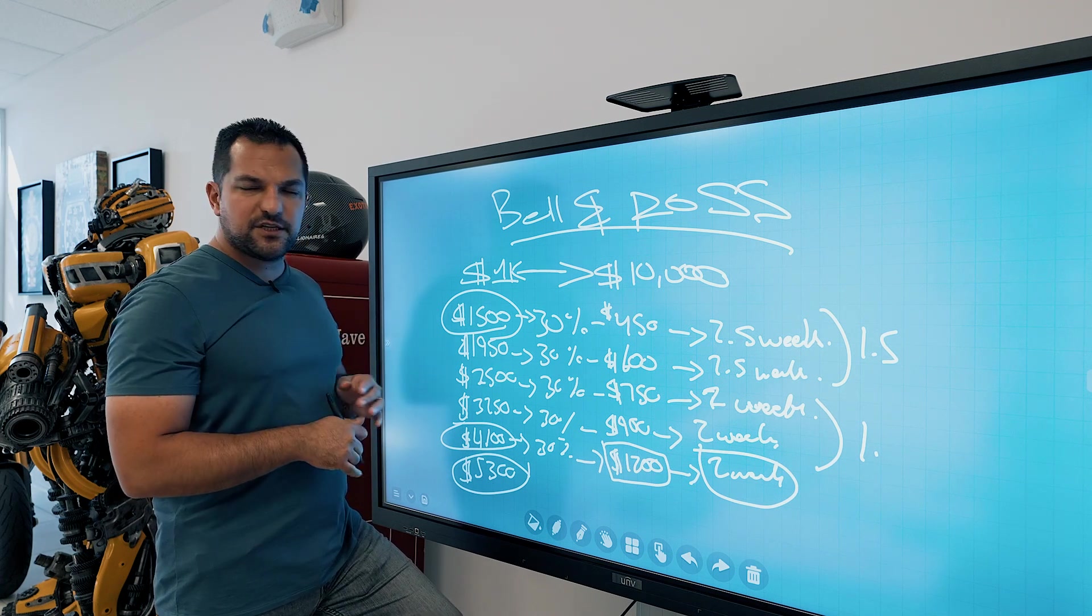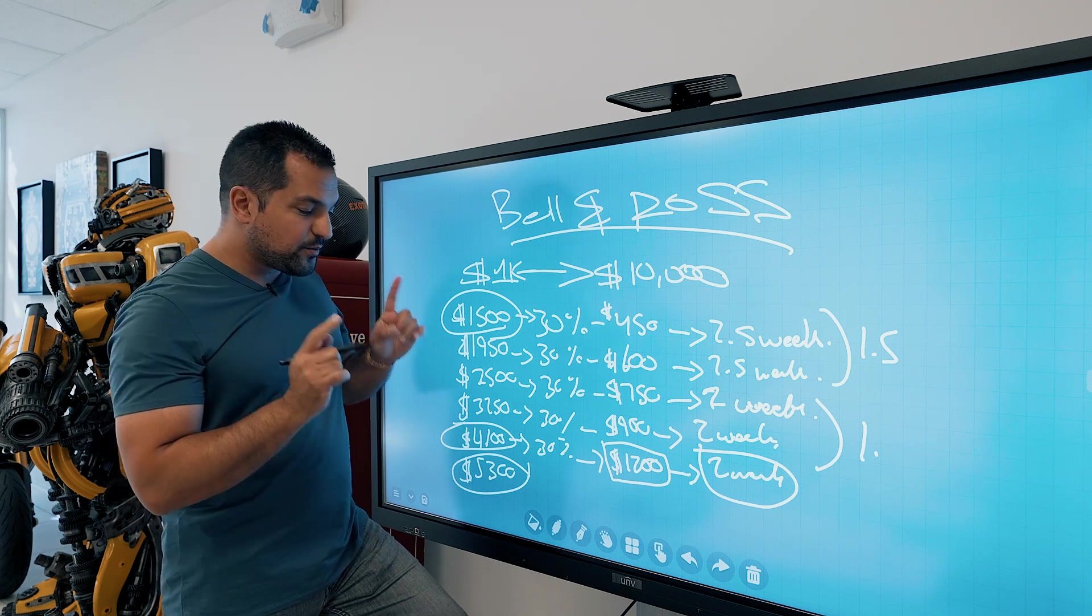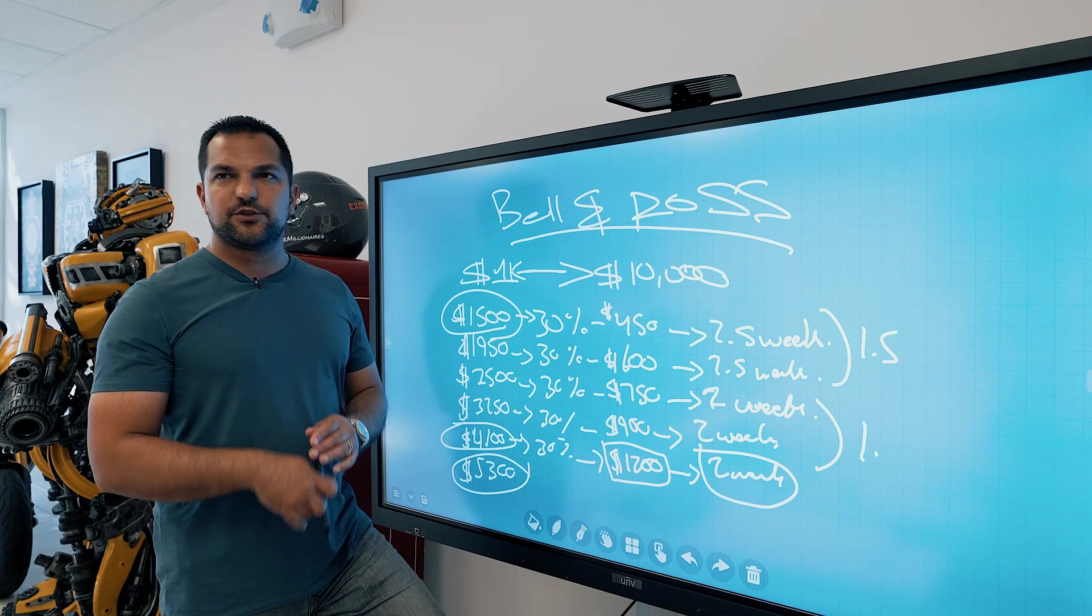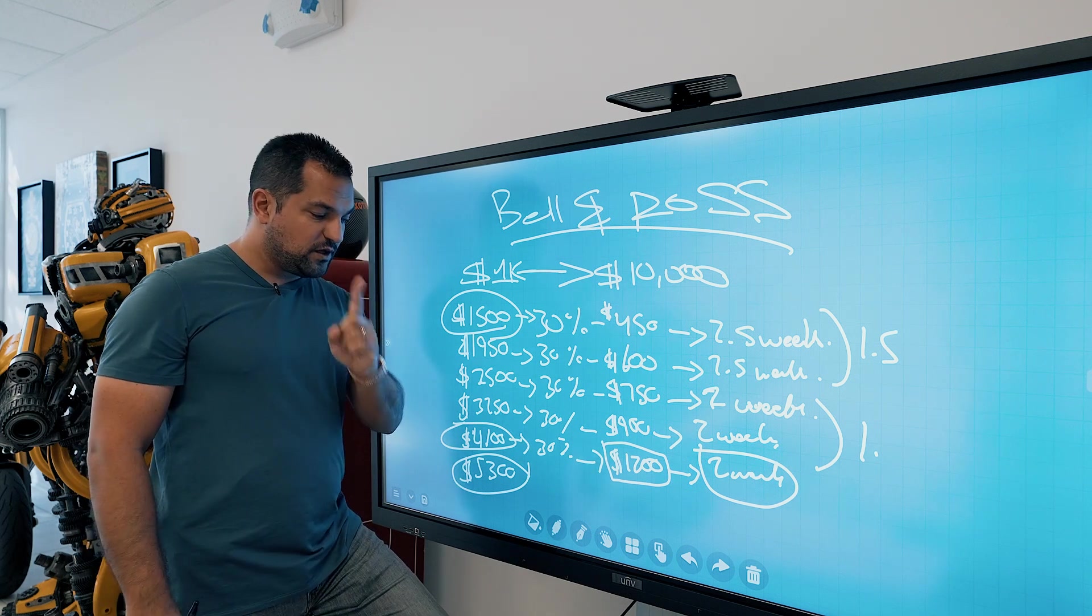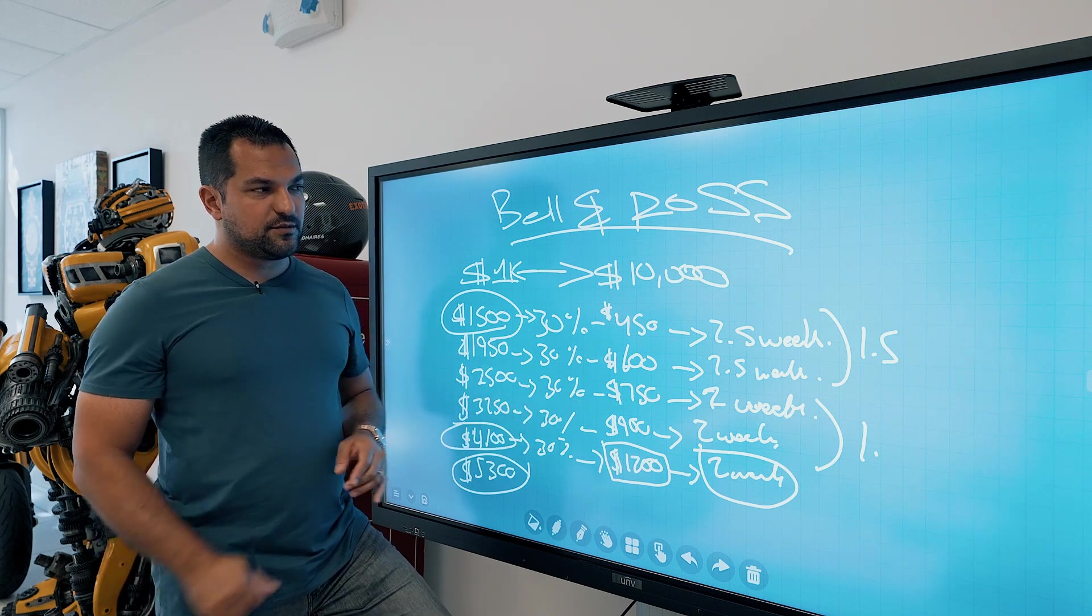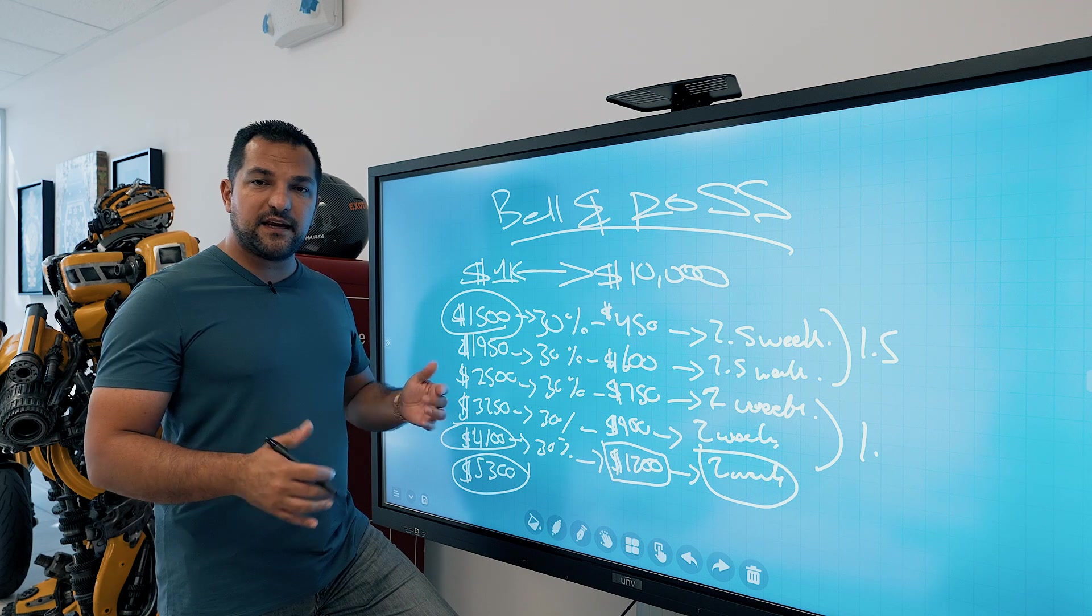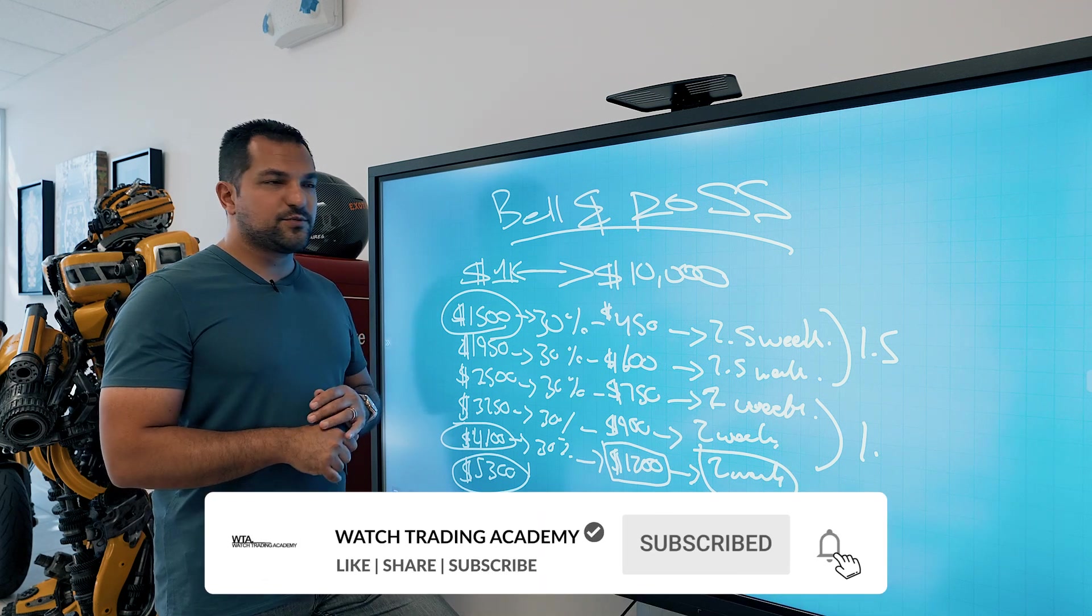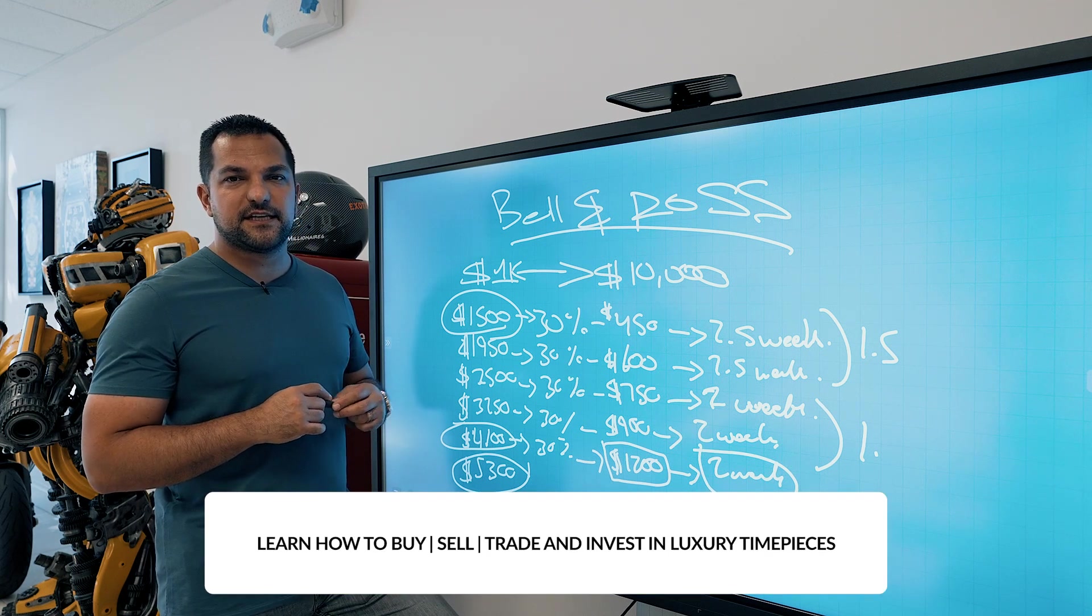So just wanted to share this with you guys. So hopefully you understand how to turn a thousand bucks into $10,000 with Bell & Ross. But more importantly, you'll learn how in two weeks you can take $4,100 and make an extra $1,200 with trading one watch, not even multiple watches, one watch, 30% margin on a brand that's not as popular as Rolex, AP Patek, and so on and so forth. Learn how to do this. Click the link in the description and join Watch Trading Academy. Like, subscribe, turn on notifications and more content like this coming to Watch Trading Academy. I'll see you guys next time.